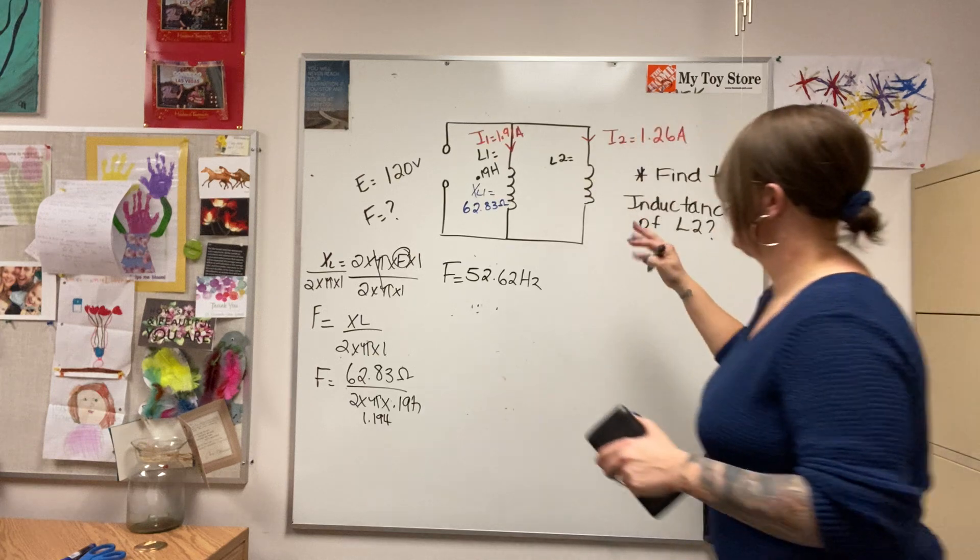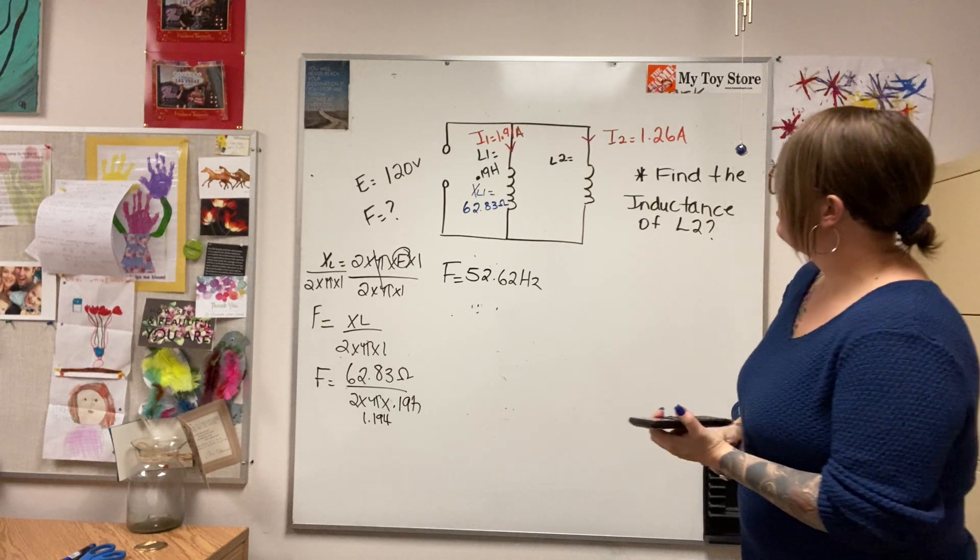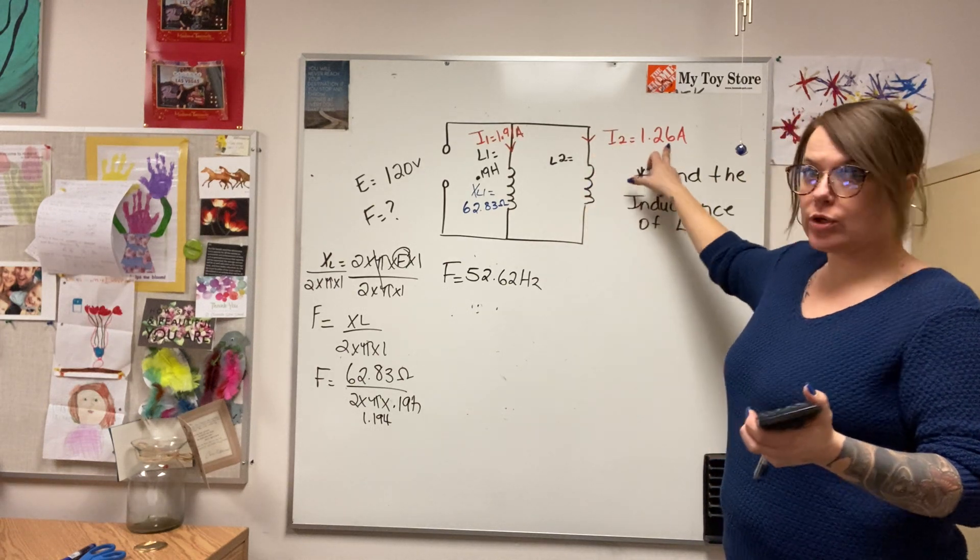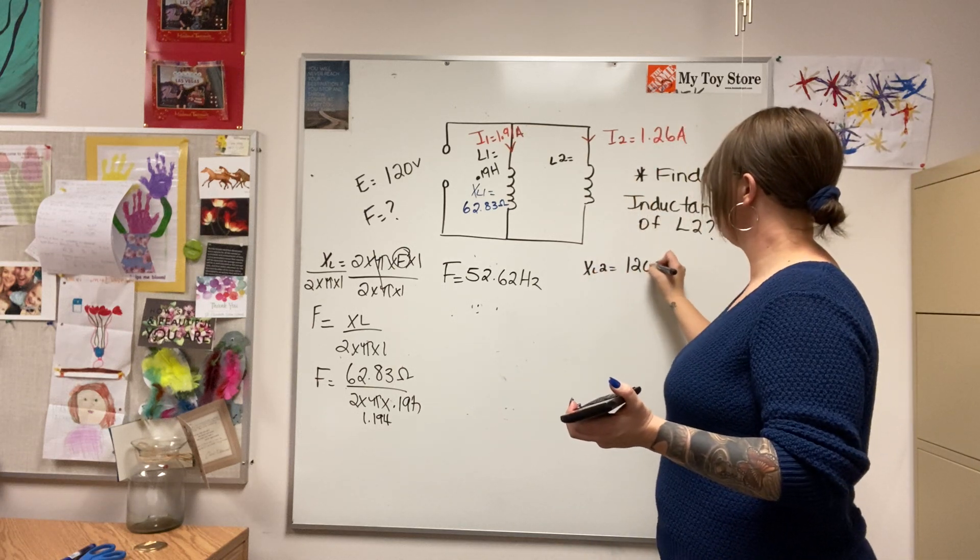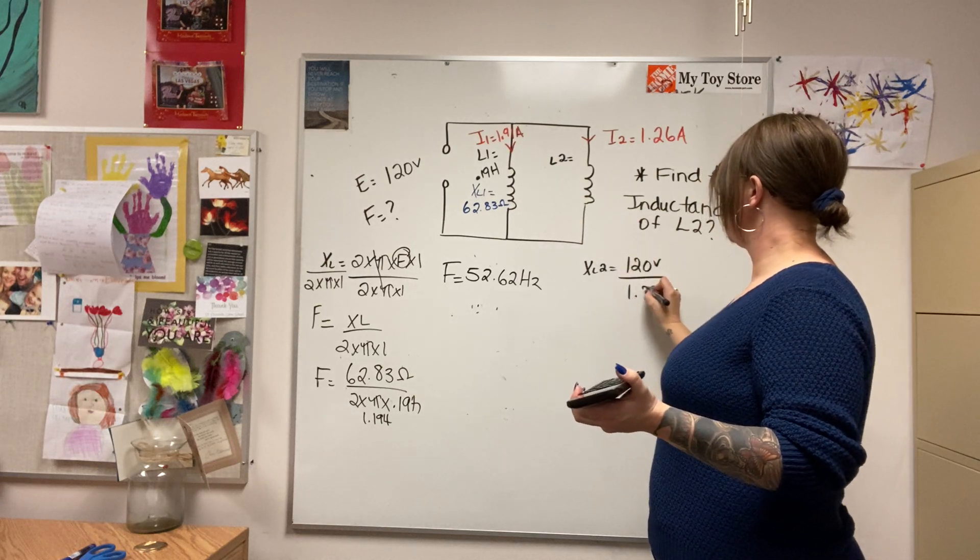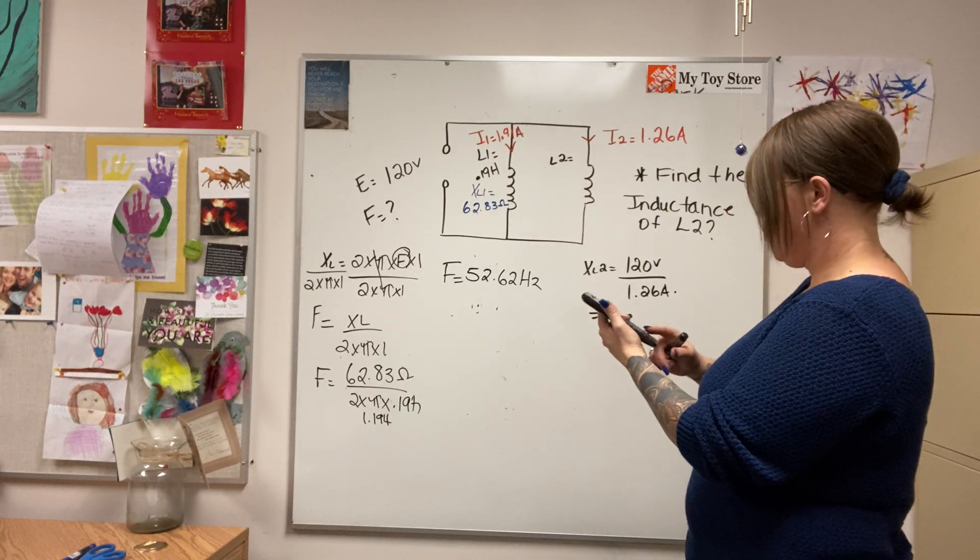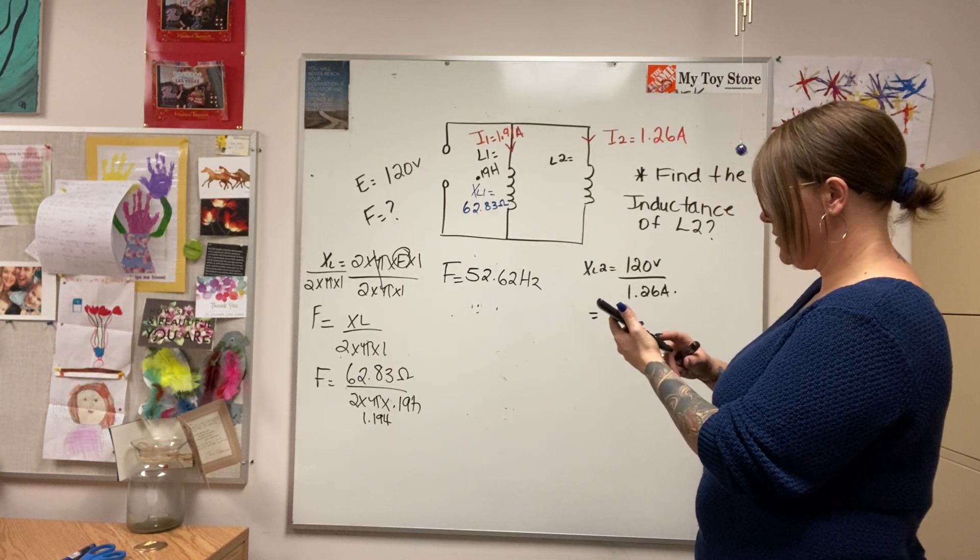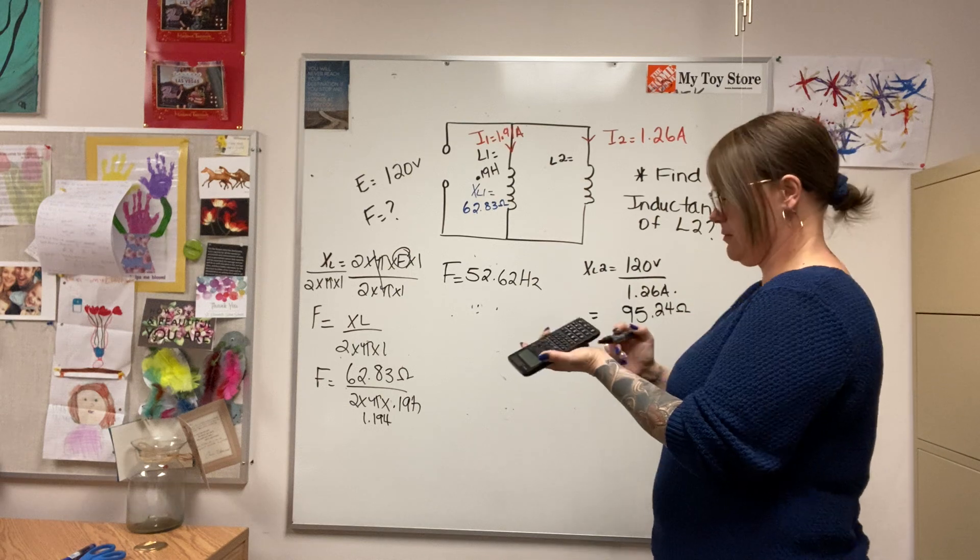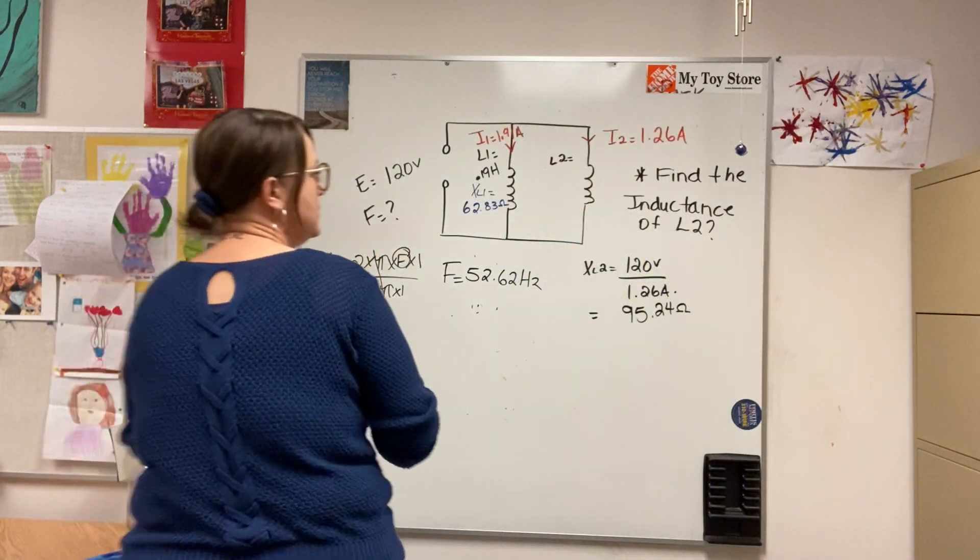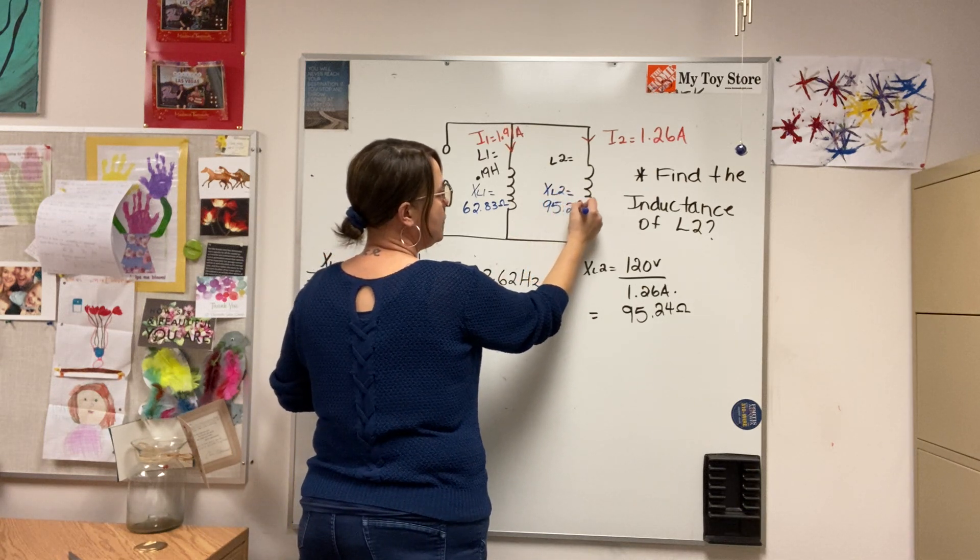Now I can apply that to finding the L of this guy. So I can find the XL because I have the volt drop and I have the current. So XL2 equals 120 volts divided by the current, 1.26 amps. And that gives me an inductive reactance of 120 divided by 1.26 equals 95.24 ohms. So that's my XL2.